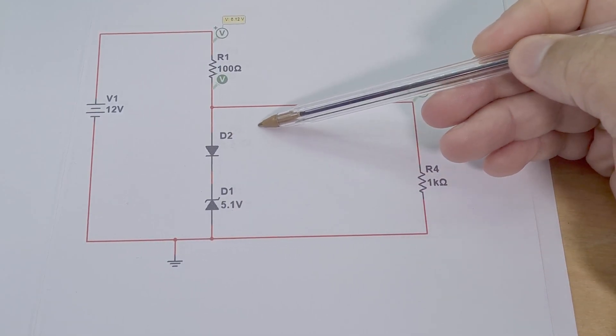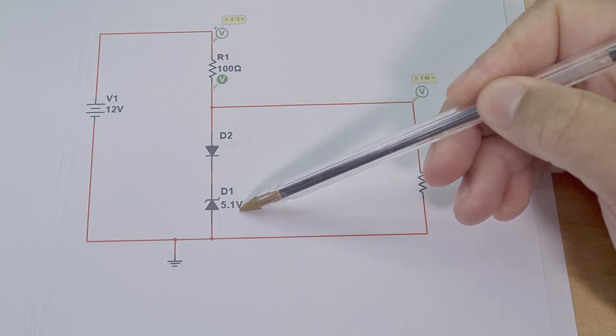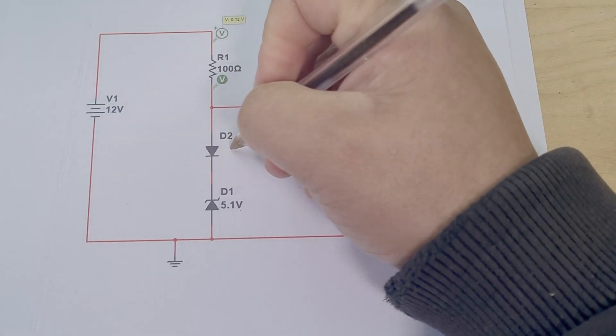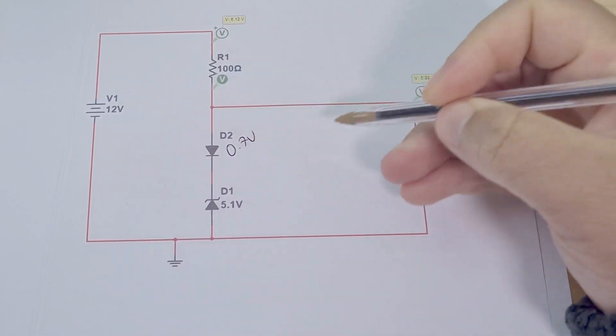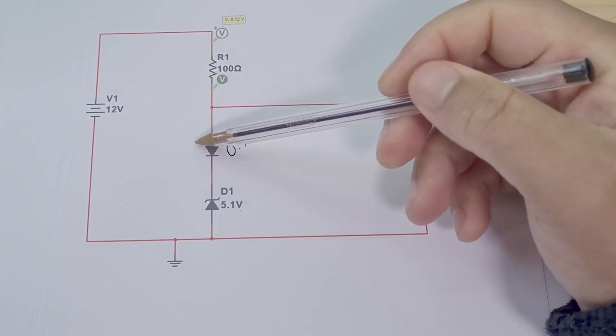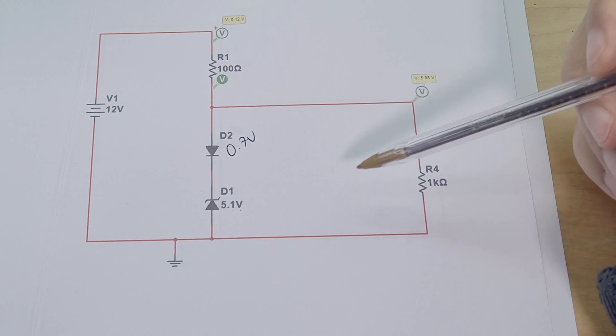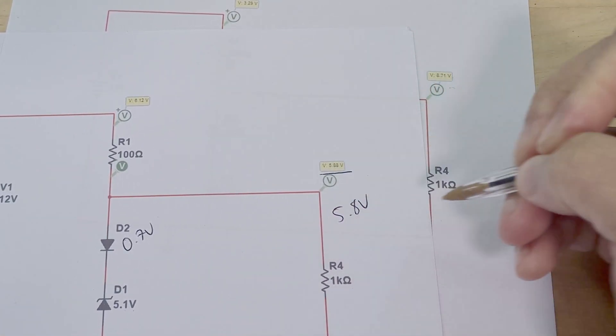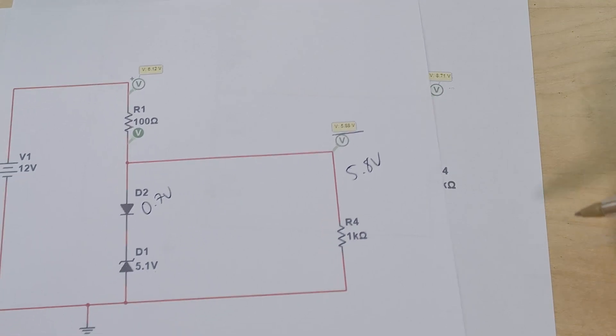So another thing you could even do is instead of just using just a normal Zener, you can actually use a normal diode as well on top of that. So here I've got a 5.1 volt Zener diode, and then I've got a normal 0.7 volt drop normal diode. So not a Zener. So you can see it's in the opposite direction. And so what it does is that actually creates a 5.8 volt output, which is quite cool. So let's do this on the breadboard.